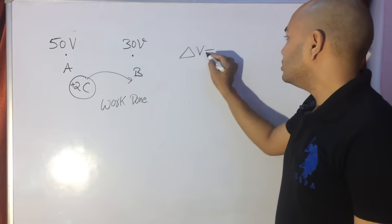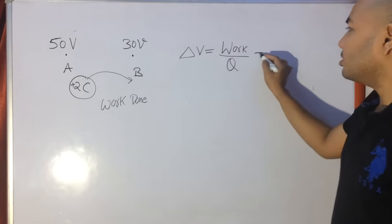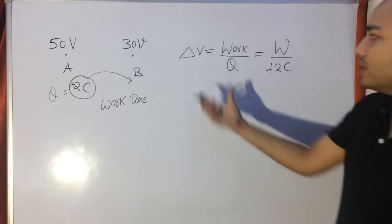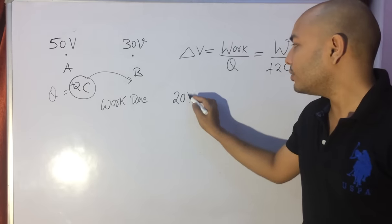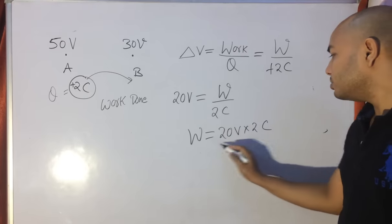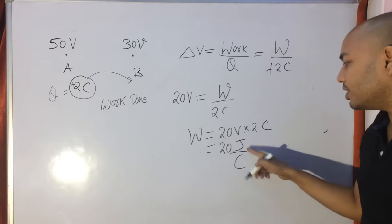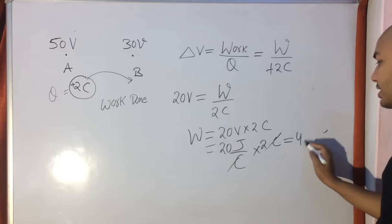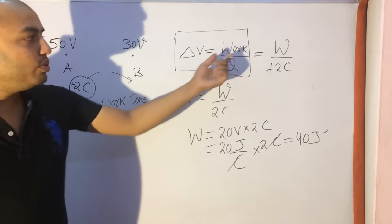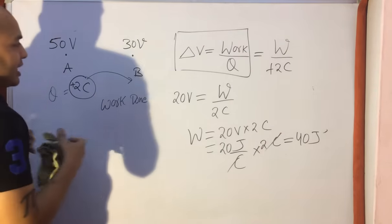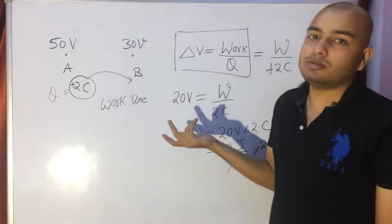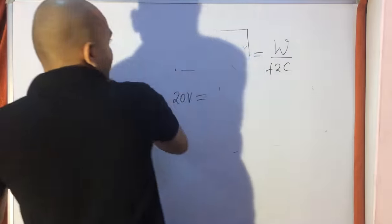Another question: point A has 50 volt potential, point B has 30 volt potential, and a 2 coulomb charge is taken from A to B. Find the work done. Using ΔV = W/Q: ΔV = 50 − 30 = 20 volt, charge = 2 coulomb. So W = 20 × 2 = 40 joules — since volt is joule per coulomb, the coulombs cancel. The work done is 40 joules.